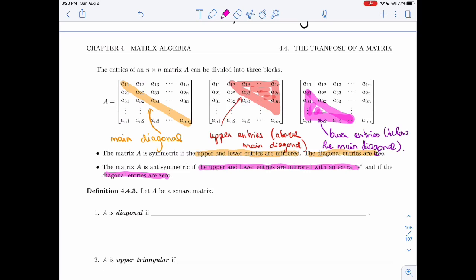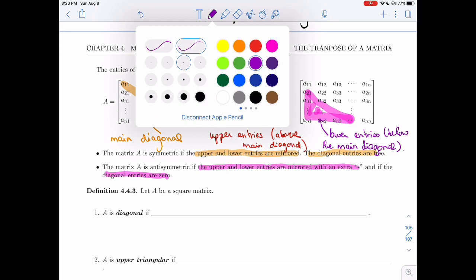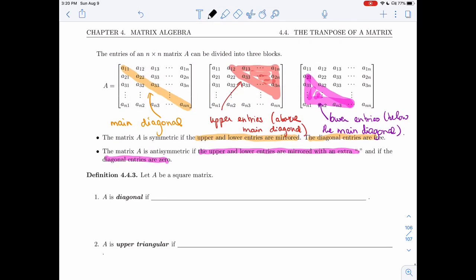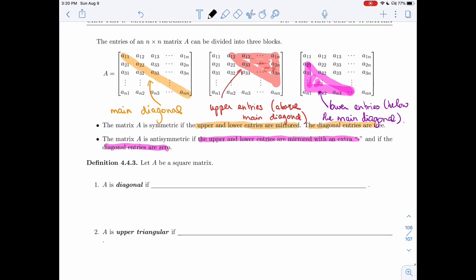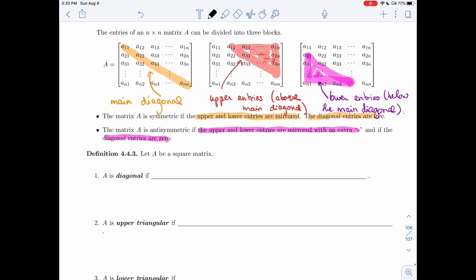All right, so seeing the different divisions of the entries, that helps you picture what it means for a matrix to be symmetric and anti-symmetric. But it also gives us three new definitions for matrices.